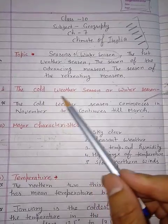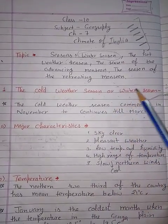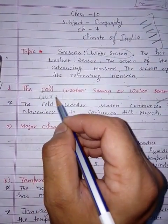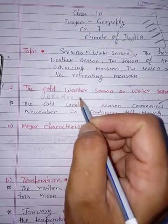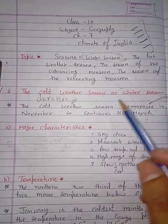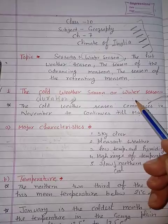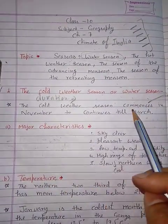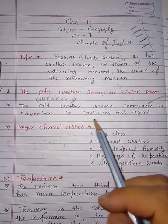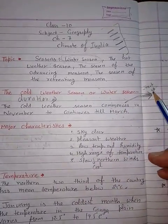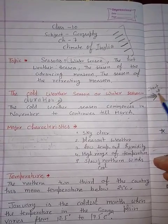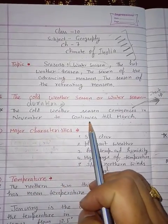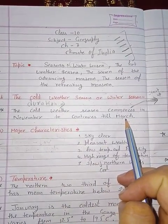The cold weather season, or we can say winter season. First of all, we talk about its duration. The cold weather season commences in November and continues till March. 'Commence' means start. So winter season starts from November and continues till March — that is the duration of winter season.